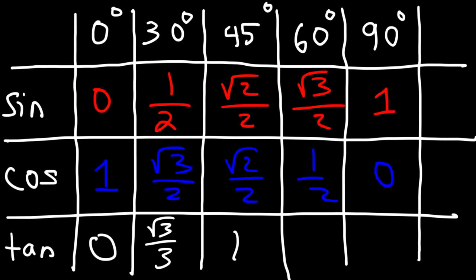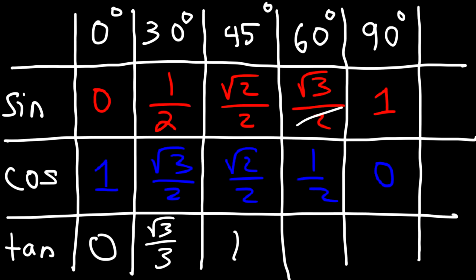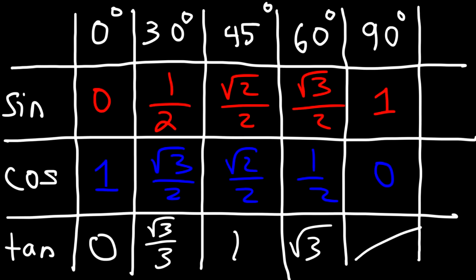Tangent 60: square root of 3 over 2 divided by 1 half — the 2s will cancel, so it's the square root of 3 divided by 1, which simplifies to the square root of 3. And tan 90 is 1 divided by 0. Whenever you divide a constant by 0, it's undefined, so tan 90 is undefined.